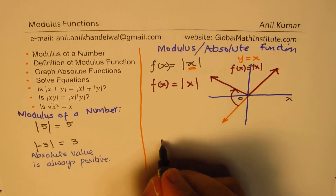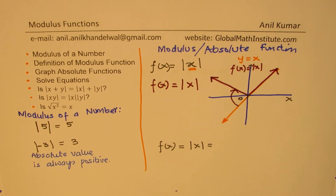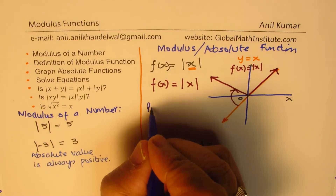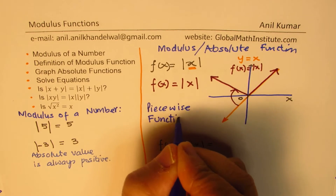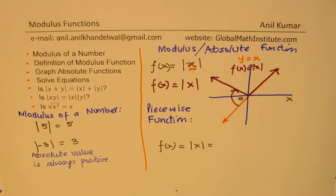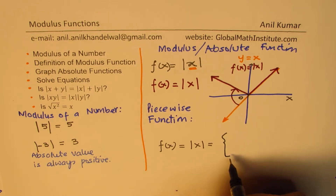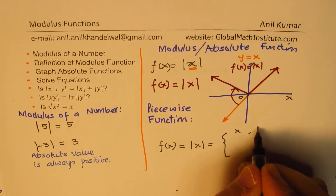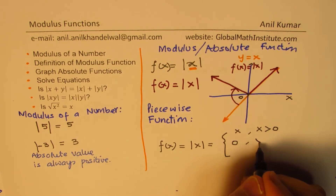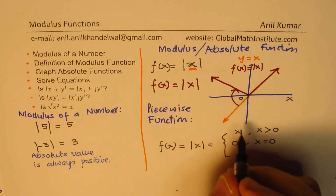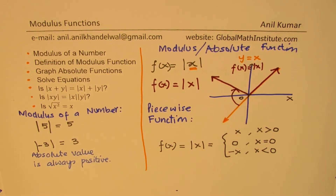Algebraically we can define this function f(x) = |x| as a piecewise function. We divide it into three pieces: it is equal to x when x is greater than zero; it is equal to zero when x equals zero; and it is negative x when x is less than zero.